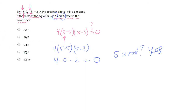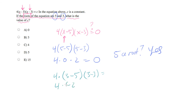Let's try plugging in 3 to see if that's a root. So I'm going to plug in 3 for x: that's 4 times 3 minus 5, times 3 minus 3. We'll end up with 4 times negative 2 times 0, which is equal to 0. So is 3 a root? Yes.